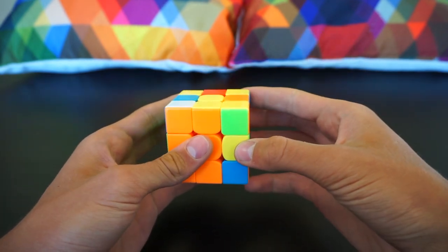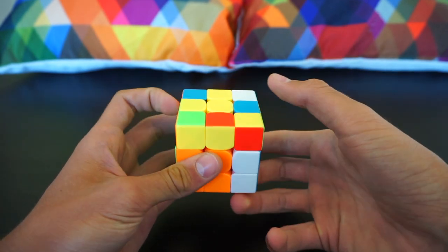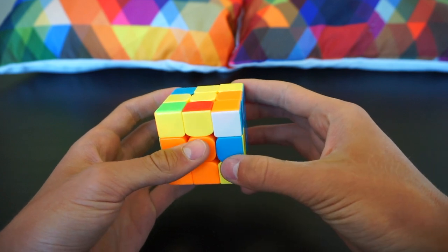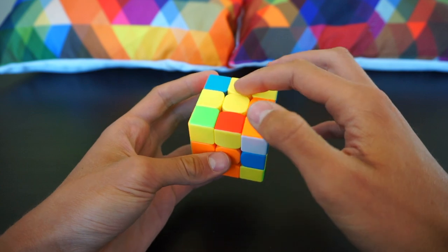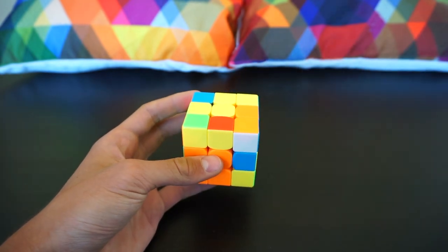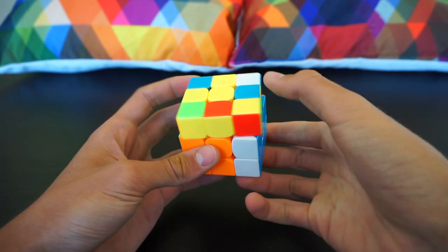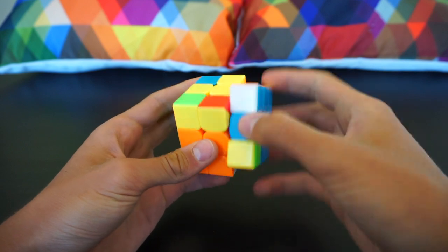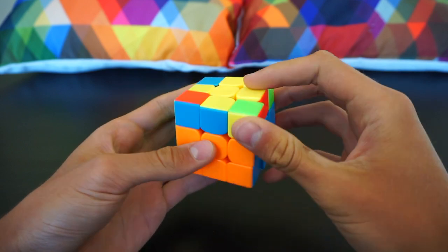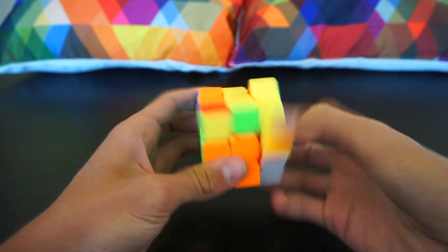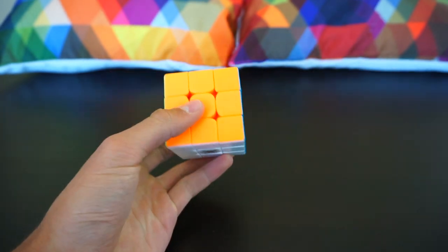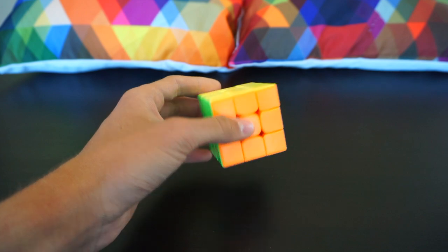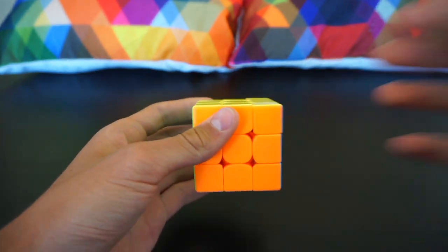Quite similar F2L case, hide it. By the way, here I went straight into the edge orientation. When I connected them I already went into the sledgehammer. Then we have a Sune with a U perm, and this was my PB average of five.